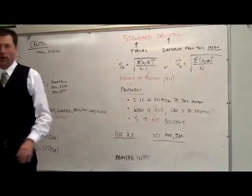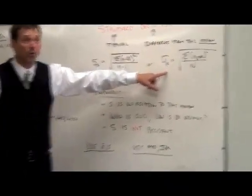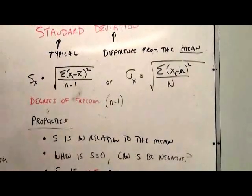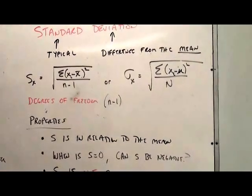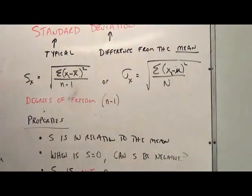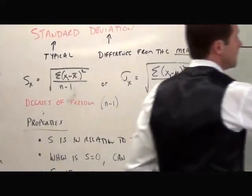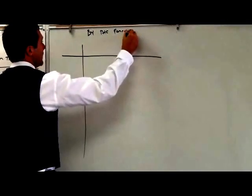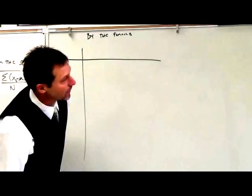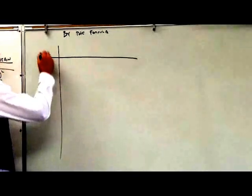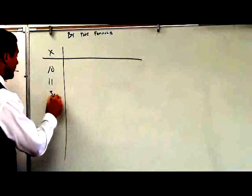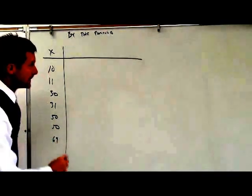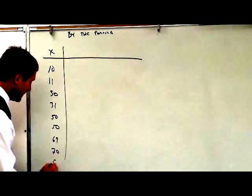There are kind of two different formulas for standard deviation, and we'll explain the subtle differences of each one. But tonight on one of your homework problems, it asks you to calculate the standard deviation by the formula. So what I'm going to show you right now is what I want to see on your paper tomorrow. The first thing we need to do — this is by the formula — is write down the original data set. So let's go ahead and do data set one. We've got 10, 11, 30, 31, a couple of 50s, 69, 70, 89, and 90.